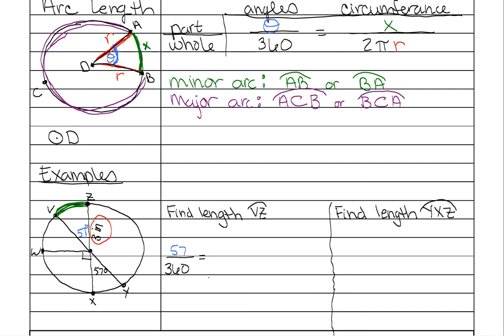Is equal to x, our part of the circumference we're looking for is x. And then over the whole circumference which is 2π.